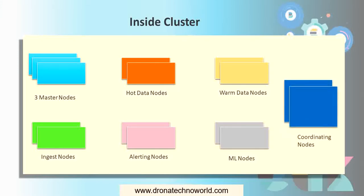The final but important node type is the coordinating node. It is used to route requests to their respective nodes. It is also used for distributing bulk indexing jobs so that we can achieve better performance.